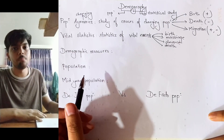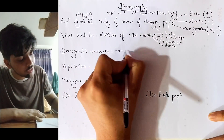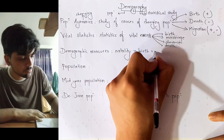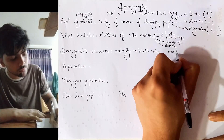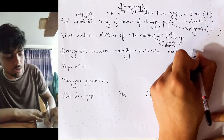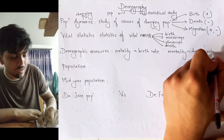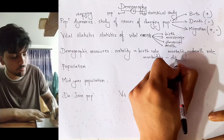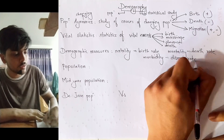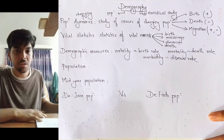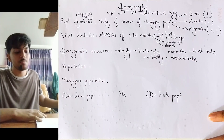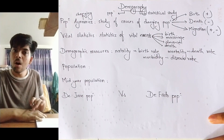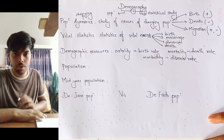Demographic measures include natality, which means birth rate; mortality, which means death rate; and morbidity, which means disease rate — that is, how many are suffering from a certain disease per unit of population.